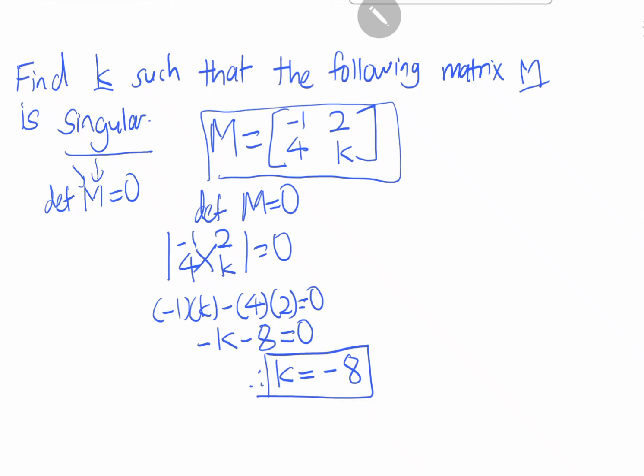So at K equals minus 8, the following matrix, the determinant of this matrix is zero, and therefore M is singular.